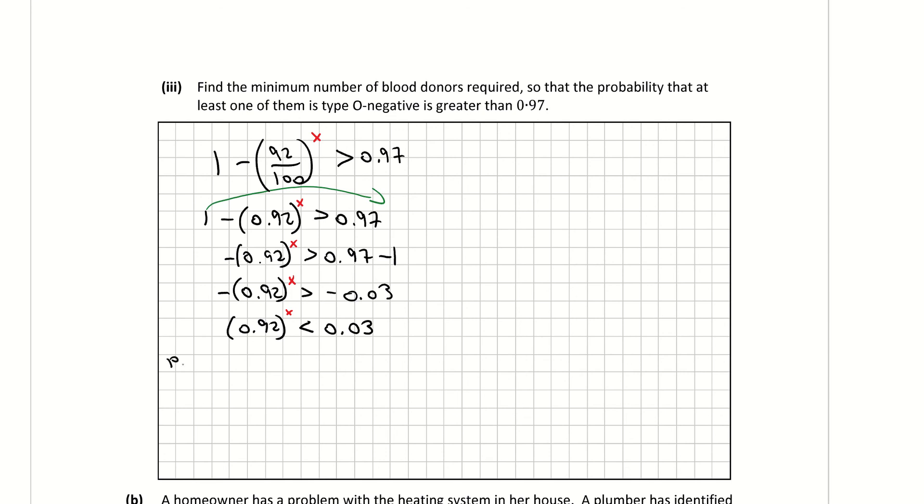Now I'm going to page 21 in my log tables, and I'm using the right-hand corner piece of information. a to the x is equal to y implies log of the base a y is equal to x. So I'm using that piece of information now in order to solve for my power x. And if I fill that in, my log, my base a is 0.92. And my y is my 0.03.